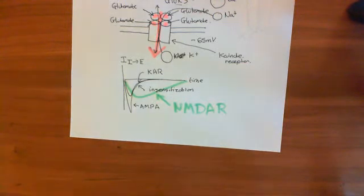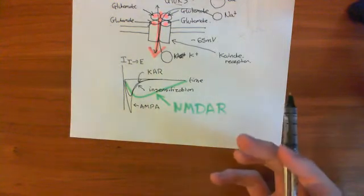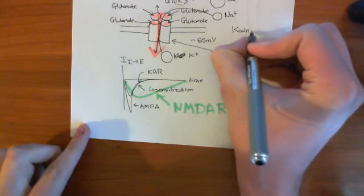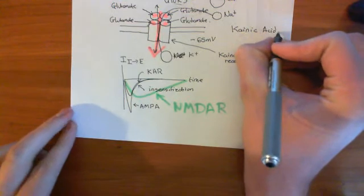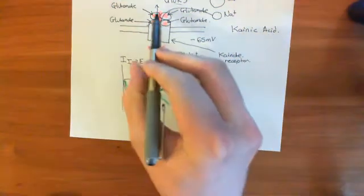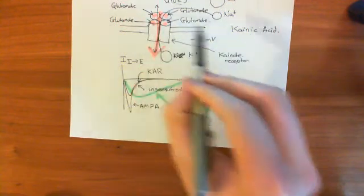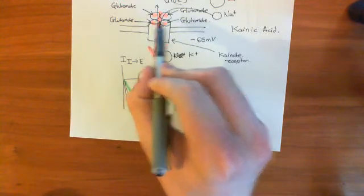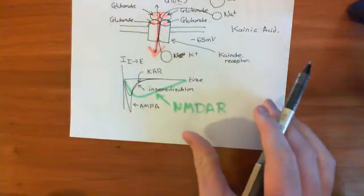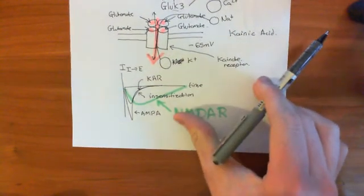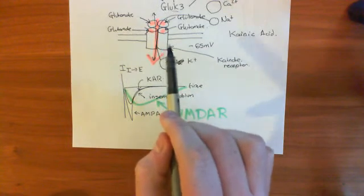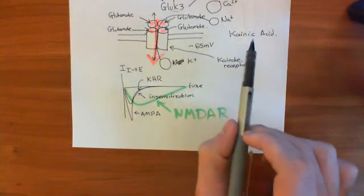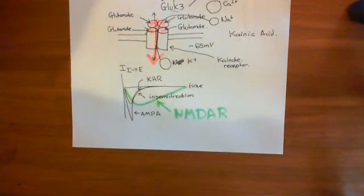Why is it called the kainate receptor? It's because kainic acid is an extremely potent agonist for this receptor. Four kainic acid molecules bind to the ligand-binding domains of the four subunits, causing the receptor to open just as glutamate does. Kainic acid is very dangerous because it leads to complete overexcitation of neurons in the brain, which can cause excitotoxicity. And that's all on kainate receptors.